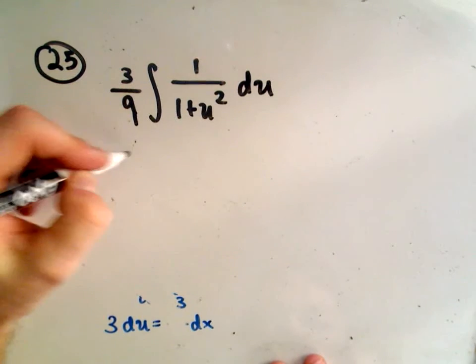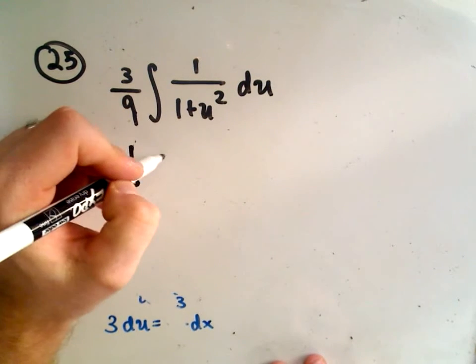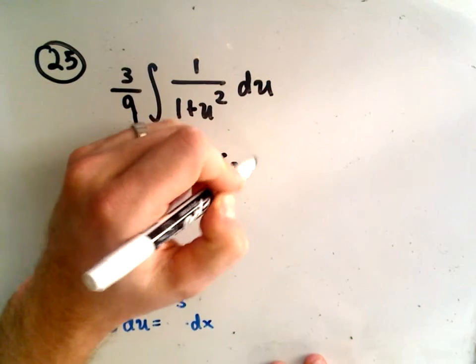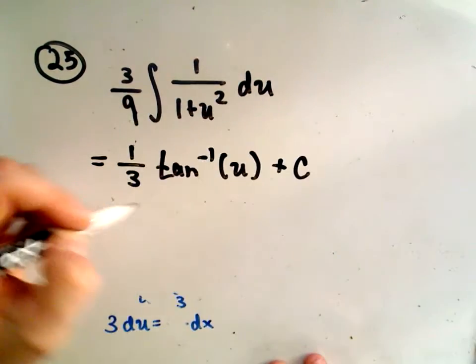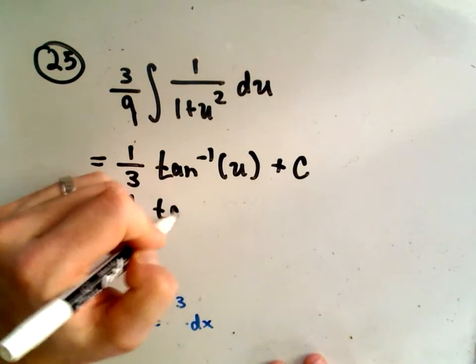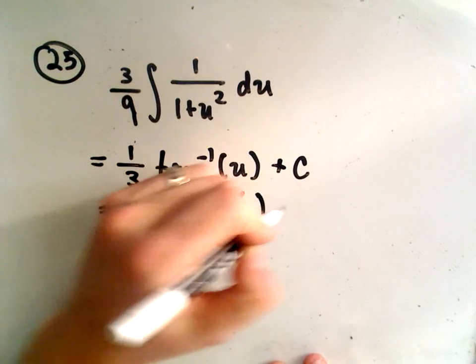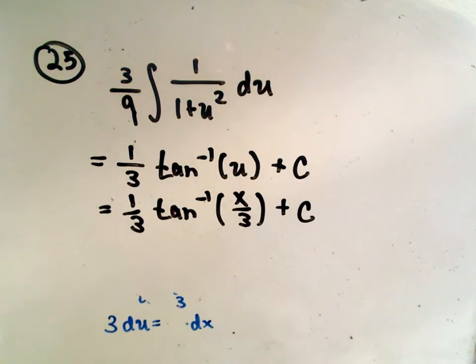So we'll get 1/3. When we integrate, we get arctangent of u plus c. And I've erased it, but remember our u substitution. We let u equal x over 3, and this will be our solution.